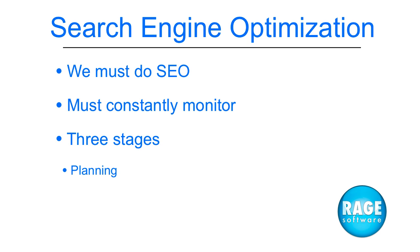The second stage will be the on-page optimization stage, where we will be looking at the different methods for making our actual site more search engine friendly. The third and final stage will be the off-page optimizations, where we go over different methods of getting our website noticed by search engines.